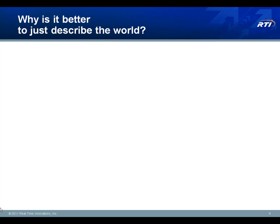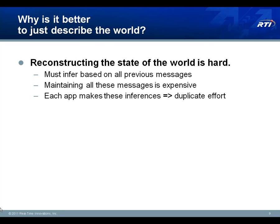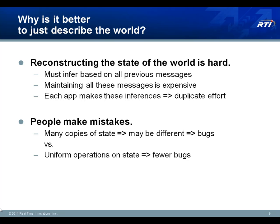So why should we prefer a data-centric approach to a message-centric approach? Inferring the state of the world based on all the communications you've previously received is difficult and expensive. You've got to maintain all this metadata and correlate it together. And if each application has to maintain the state relevant to it, there's going to be a lot of duplicate work. While you're doing all that work, you could make mistakes — one copy of the state might be inconsistent with another, or you might miss a message so that a subsequent change is interpreted relative to an incorrect previous state. This leads the model of state within your system to diverge from the real world over time. In contrast, when you treat state explicitly and uniformly, you reduce the chance for these kinds of errors.